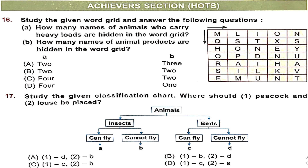Achievers section. Question 16: Study the given word grid. Part A — how many animals that carry heavy loads are hidden? Going top to bottom, I found horse and oxen — that's two. Part B — how many animal products are hidden? Going left to right, I found honey and silk — that's two. So the right answer is Option B: two animals and two animal products.